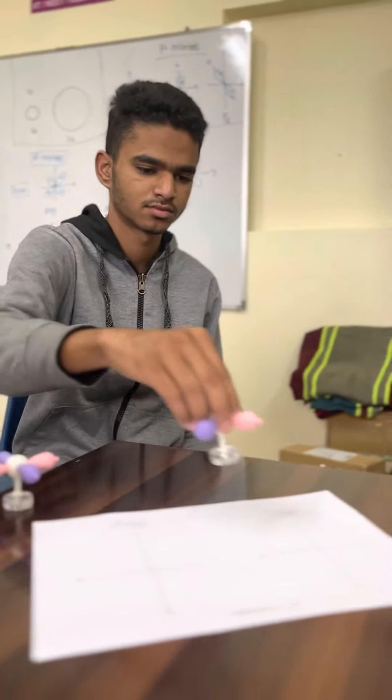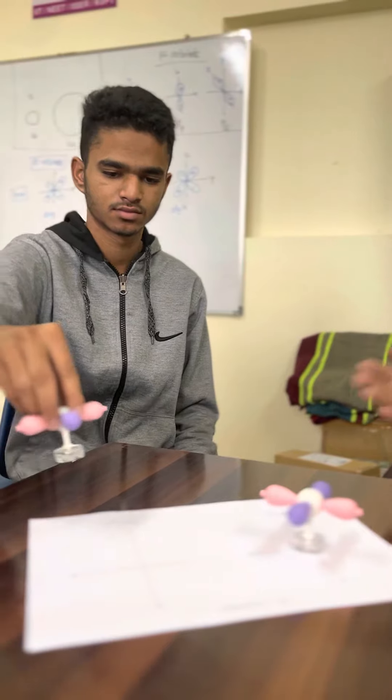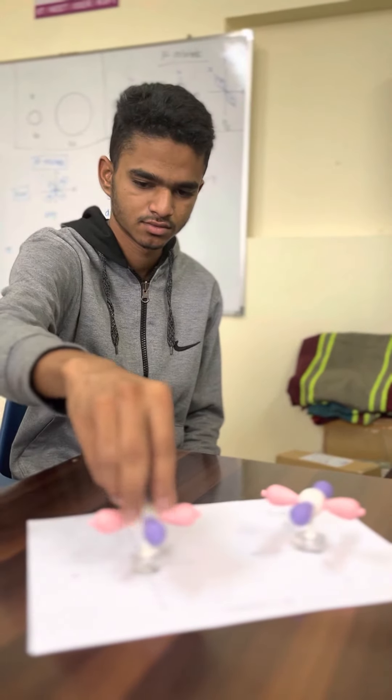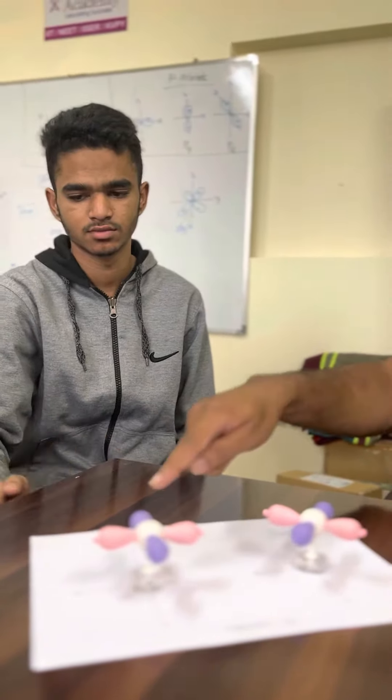Shows the dxy. Very good. Then the dx square y square. The difference is, in dx square y square, electron density is along the axis. In dxy it is in between the axes.